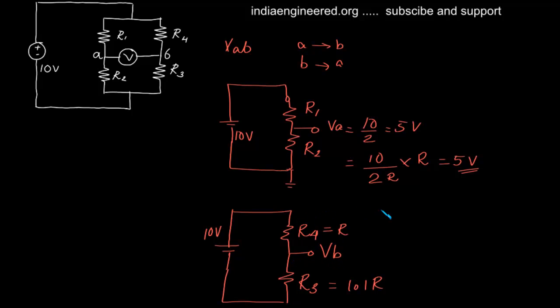VB is 10 volts divided by the total resistance - that is R plus 1.1R - times R3, which is 1.1R.